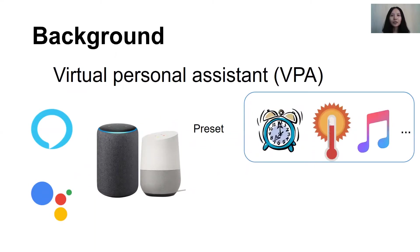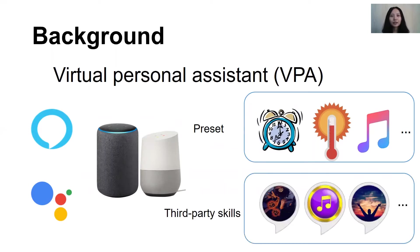At first, these smart speakers only had some preset functions, such as set alarm clock, calendar reader, play music, and so on. To provide more abundant services, providers encourage third-party developers to add new abilities, like playing games, ordering products, etc. These are called skills by Amazon and actions by Google. We will call them skills in the next parts.